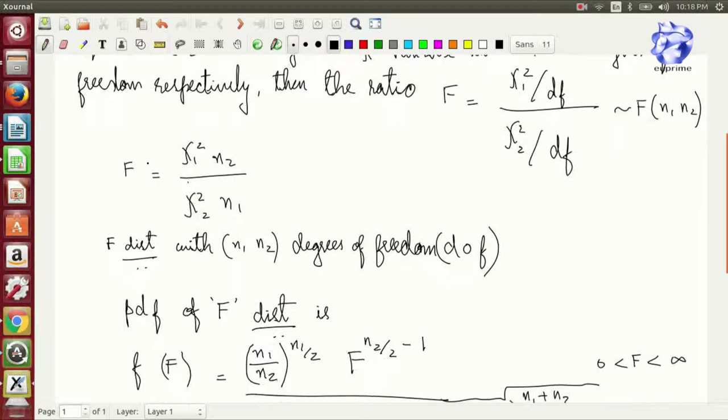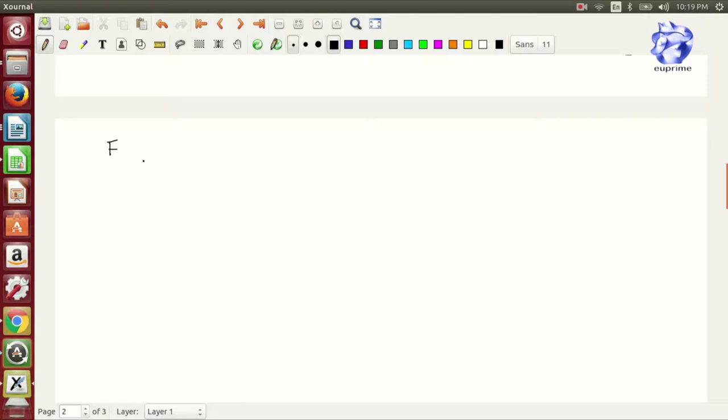Hey guys, welcome back. Today we're going to talk about the F distribution. It's the only F word you're allowed to use. It's also known as the variance ratio distribution. It is a continuous probability distribution.